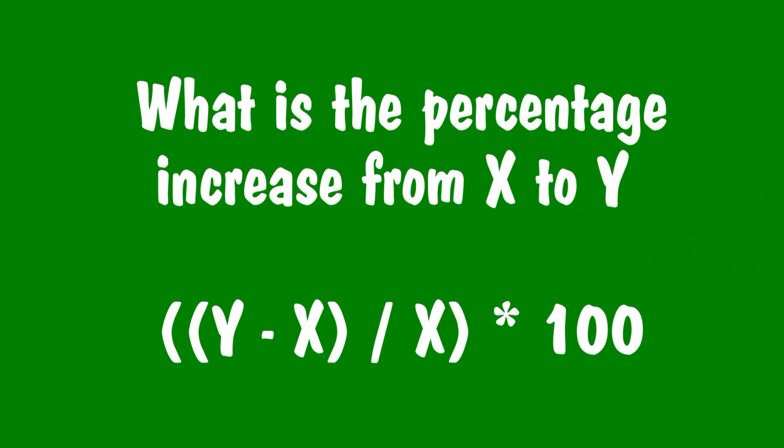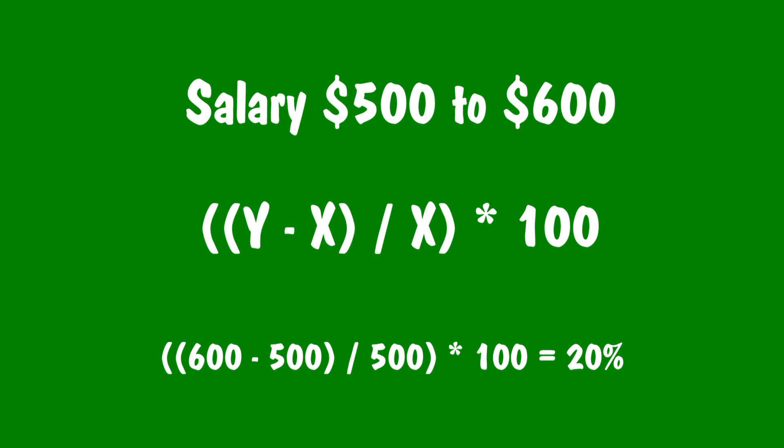So for the last lesson in this video, we're going to do another question called, what is the percentage increase from x to y? So for example, your salary increased from $500 to $600 and the formula here is y minus x divided by x times 100. So in this case, x is 500 and y is 600. So you would have to do 600 minus 500 divided by 500 times 100. If you do that math, you're going to find out that your salary went up 20% and that sure is a nice salary increase.